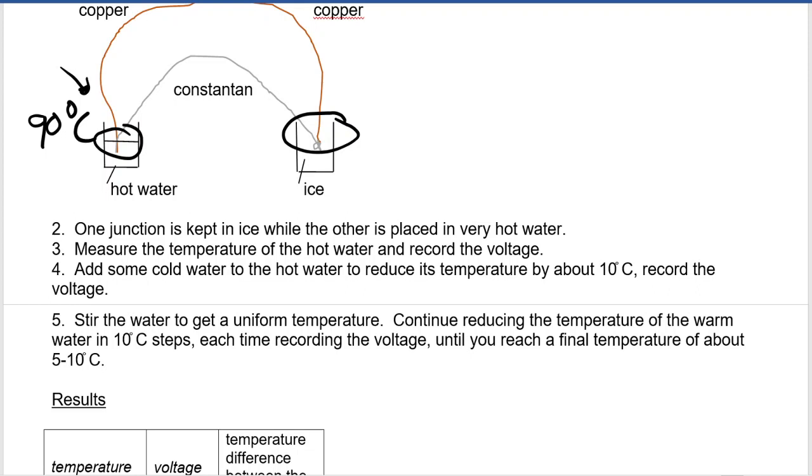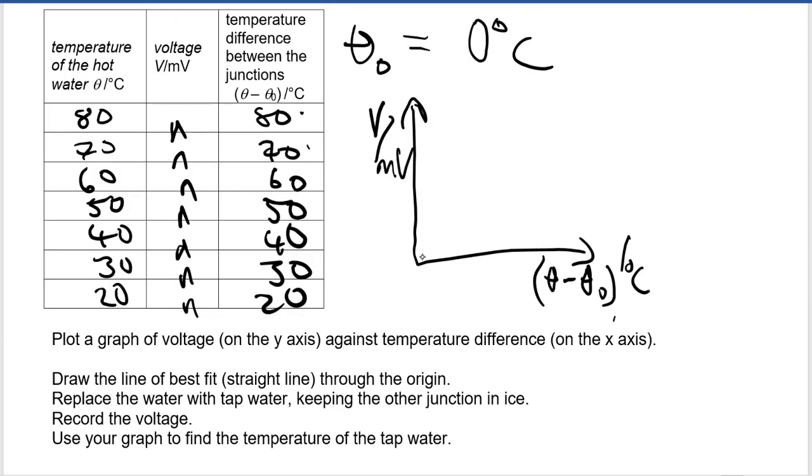So on the y-axis, you are going to have voltage measured in millivolts. And then on the x-axis, you're going to have theta minus theta naught, which is the temperature difference in degrees Celsius.